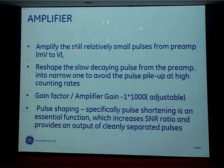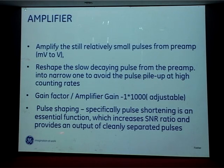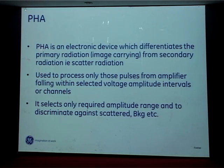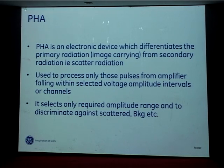The amplifier further amplifies the signal from millivolts to volts and reshapes the slowly decaying pulse. Pulse shaping is an essential function that increases the signal-to-noise ratio and provides an output of cleanly separated pulses. The pulse height analyzer (PHA) is an electronic device that differentiates primary radiation from secondary scattered radiation. It retains only pulses of a particular energy and cuts out scatter, which would otherwise degrade image quality.